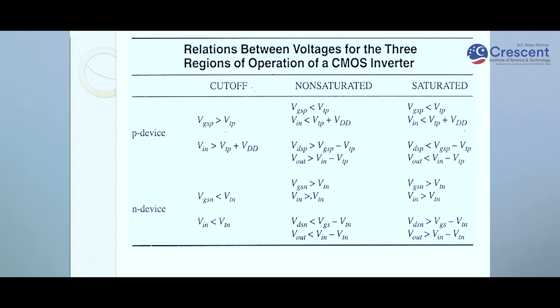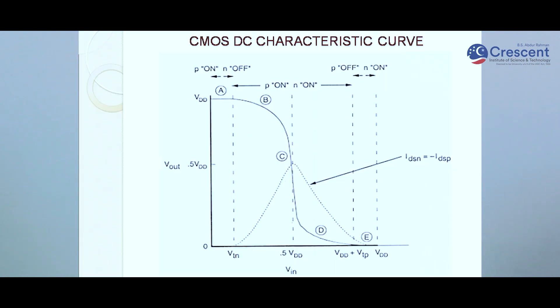A table gives the voltage relationships for various regions of operation for both the P device and N device. The three regions are cutoff, non-saturated (also called linear or resistive region), and saturated region. The CMOS DC characteristic curve shows the relation between VIN and VOUT. When VIN is zero, VOUT equals VDD, and as VIN increases toward VDD, VOUT drops toward logic zero. This curve is divided into five regions: A, B, C, D, and E.